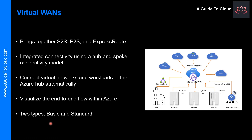There are two types of Virtual WANs: basic and standard. The basic type supports site-to-site VPN only. The standard type offers ExpressRoute, point-to-site, site-to-site, inter-hub, and VNet transitioning through Virtual Hub.